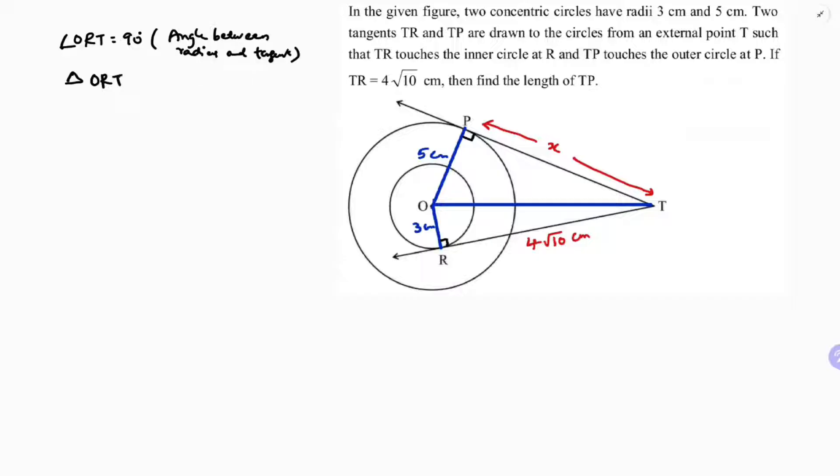So I will take triangle ORT. The hypotenuse here, as 90 is here, so hypotenuse is OT. So by Pythagoras theorem, hypotenuse square equals sum of the squares of other two sides. So OT² = OR² + RT². Now OT I need to find. OR is 3 and RT is 4√10.